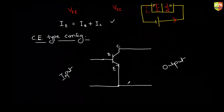Similarly, there can be common base and common collector configurations, but those are not in our syllabus, so we won't get into details. Now, just like when we discussed diodes we looked at the plot between voltage and current, similarly in the case of a transistor, for common emitter configuration, we are going to discuss how voltage and currents are related.